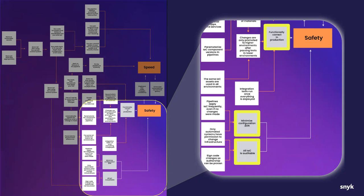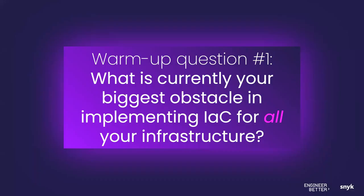I see somebody asked for the links and Stefan and others are posting those in the chat. We'll get those here in just a second. So that's what we're going to focus on today. As we said, we want this to be very interactive. We'll start with a question to get some feedback in the chat: as you think about your own personal journeys and your organization's work with IaC today, what kind of obstacles are you facing in your adoption of IaC?